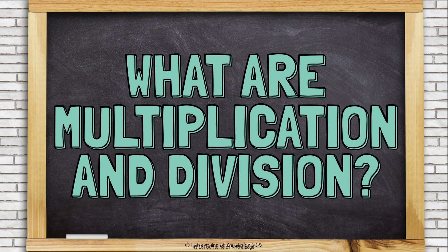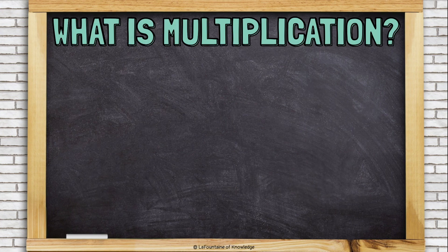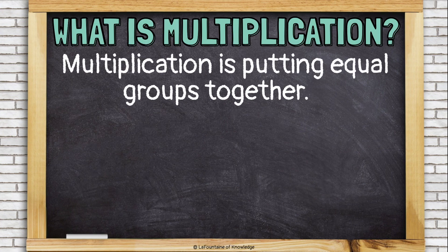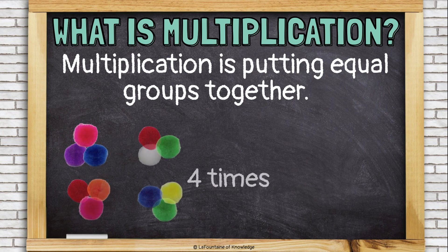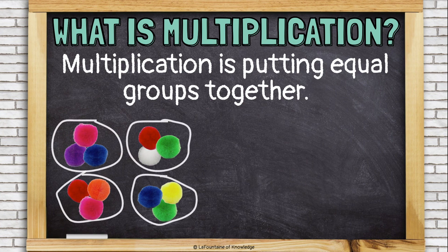What are multiplication and division? Multiplication is putting equal groups together. Here I have 3 pom-poms, and I have it 4 times. This is the multiplication problem 3 times 4.